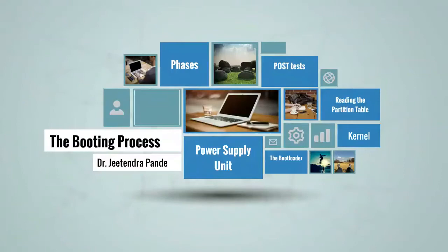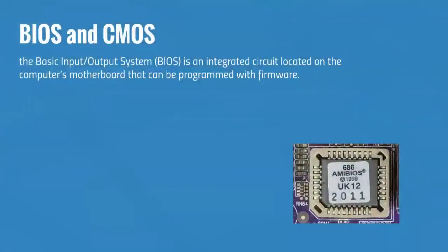The second phase is BIOS and CMOS. At its core, the basic input-output system or BIOS is an integrated circuit located on the computer's motherboard that can be programmed with firmware. The firmware facilitates the boot process so that the operating system can load.